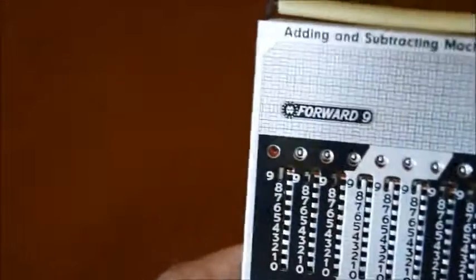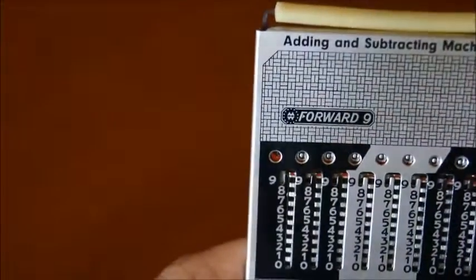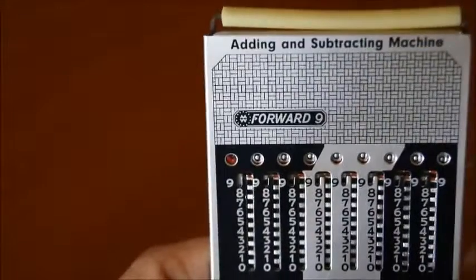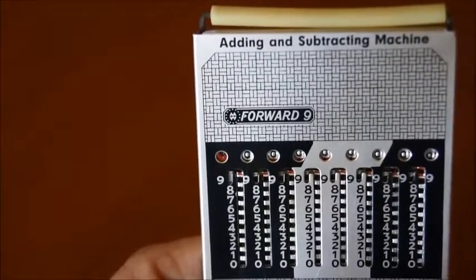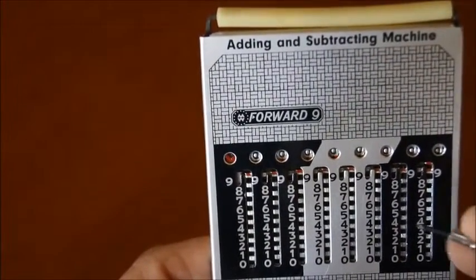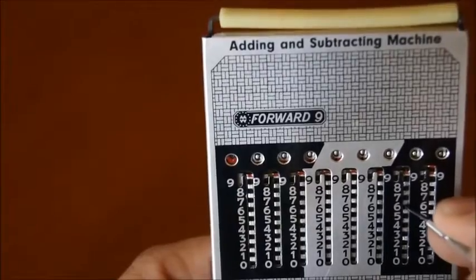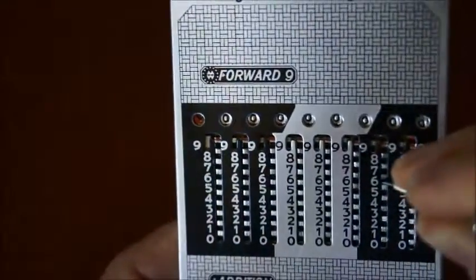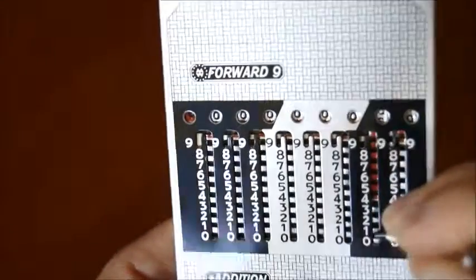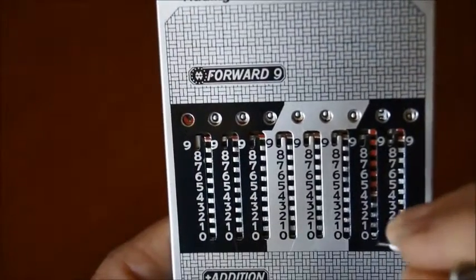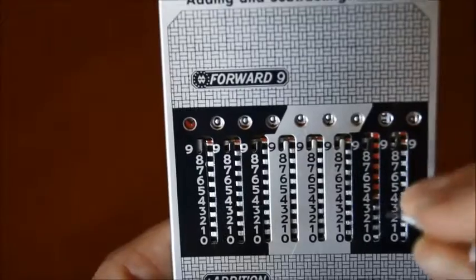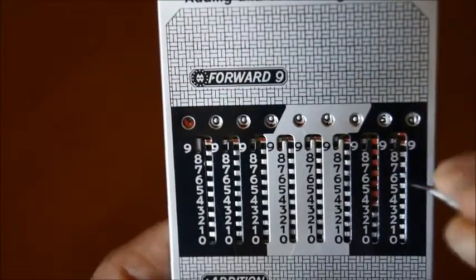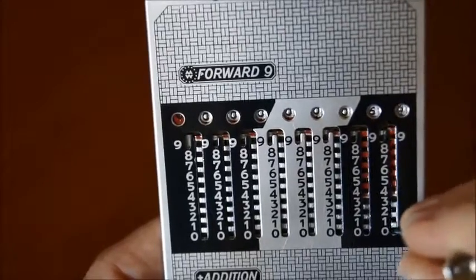So how does it work? Let's say that you want to add two numbers: 66. What you do is put your stylus here on the number six and push it down, and you'll notice there will be a six displayed here. Now if I want to add the second six, I do the same thing and I have 66 displayed in the small windows.